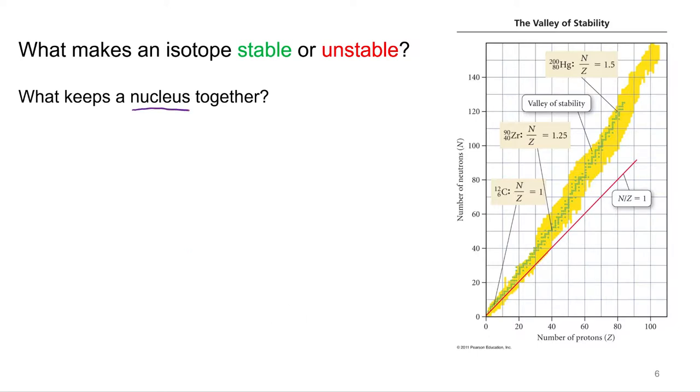So what's in the nucleus? Protons. What else? Neutrons. All right, so let's just think of helium. Helium has two protons, two neutrons. So this is helium's nucleus.